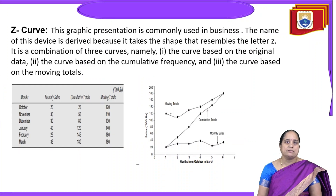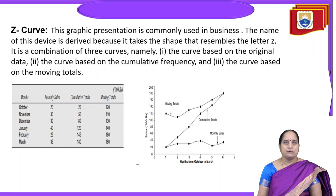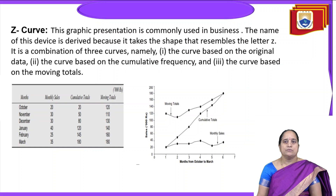The next type of curve is known as the Z curve, which is commonly used in business. The name is derived because it takes the shape of the letter Z. It is a combination of three curves: the curve based on original data, the curve based on cumulative frequency, and the curve based on moving totals. Using the combination of these three curves together, it resembles the shape of Z.